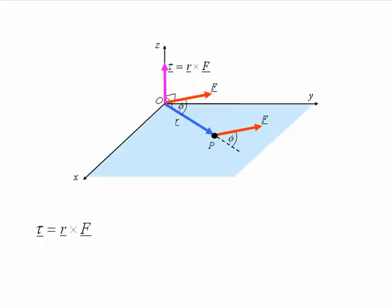In other words, the vector product between the position vector and the force F. The direction of the torque is perpendicular to the plane containing R and F, and its sense is determined by the right-hand rule.